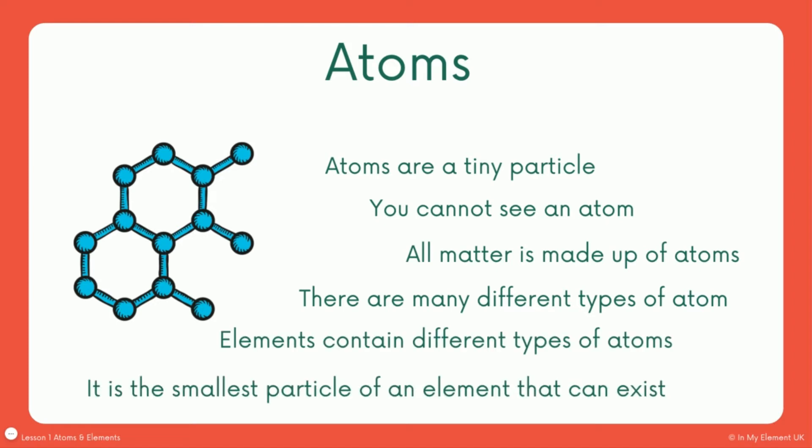The smallest particle of an element is called an atom. So for example, let's say gold. In gold you will have lots of gold atoms and they are all arranged together to make the element of gold. One gold atom won't necessarily look like gold as you know it, but when they are grouped together they form gold and they will have the properties of gold.